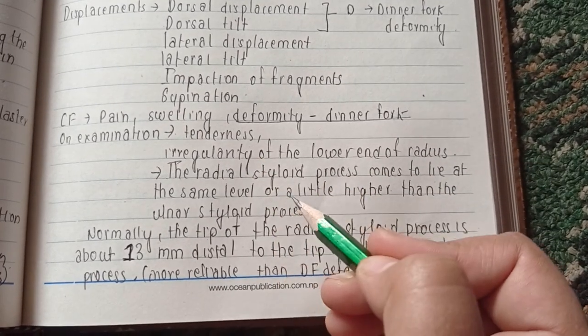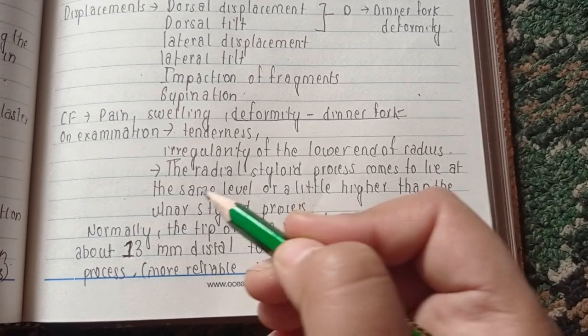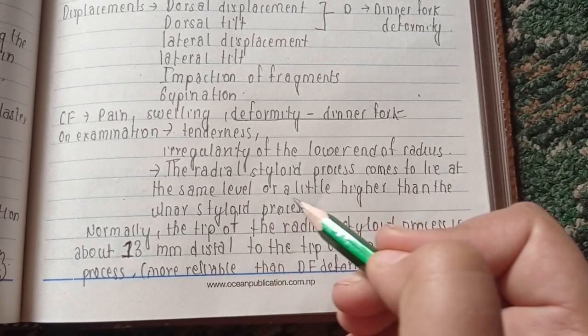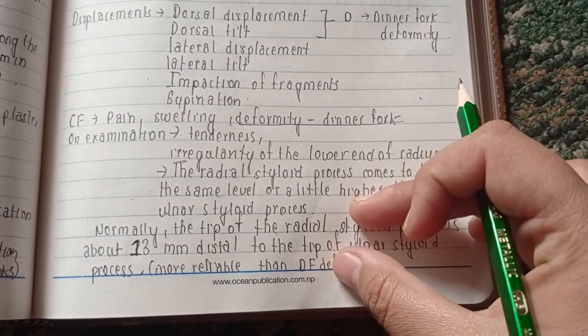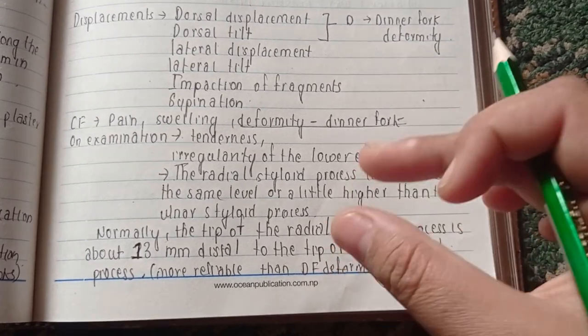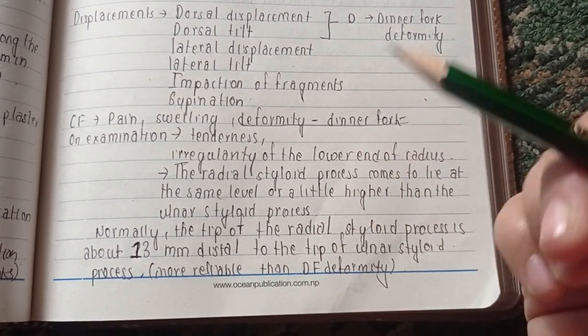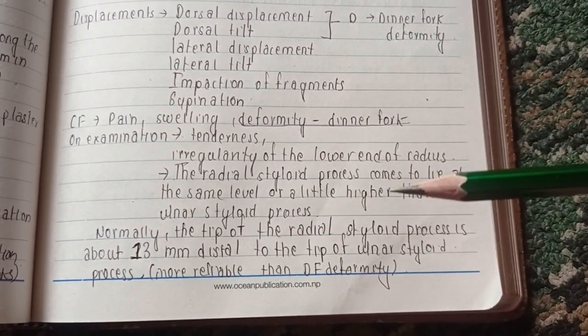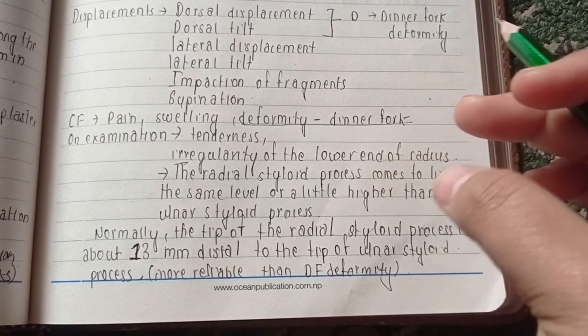The radial styloid process comes to lie at the same level or a little higher than the ulnar styloid process. This is more reliable than the dinner fork deformity.